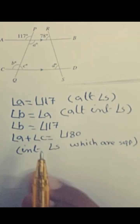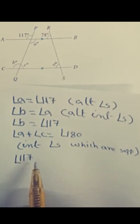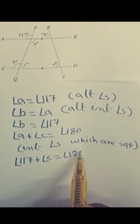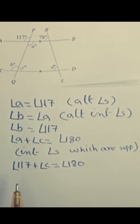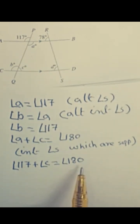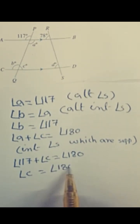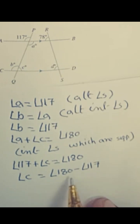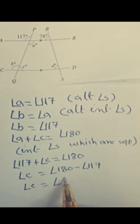We put the value of angle a into the formula: 117 plus angle c equals 180. In an algebraic equation, when we move a value to the other side of the equals sign, it changes sign. So 117 moves to the right as minus: angle c equals 180 minus 117, which gives angle c equals 63°.